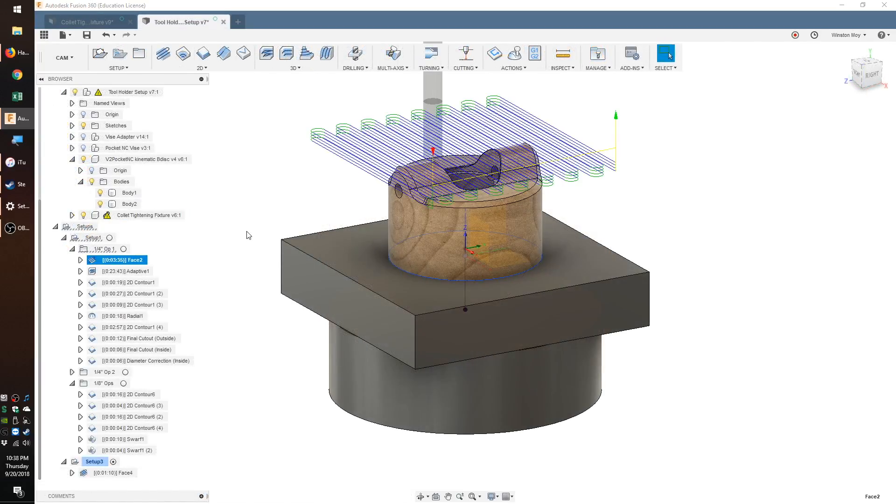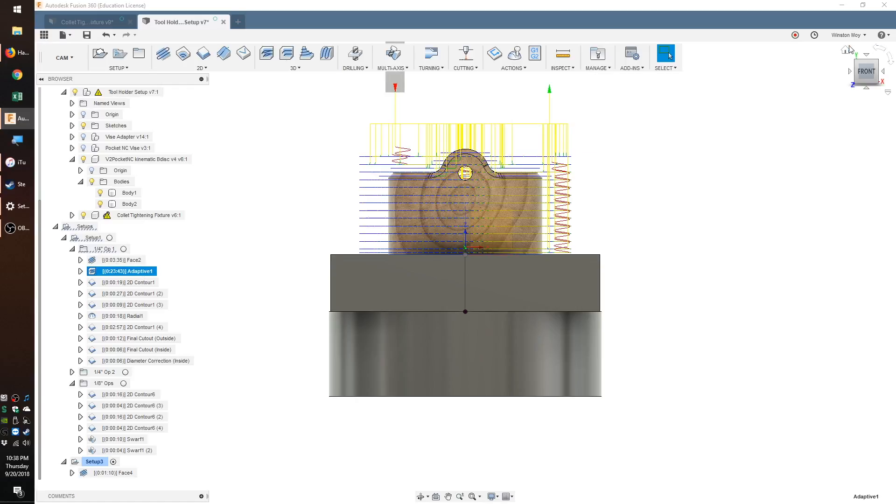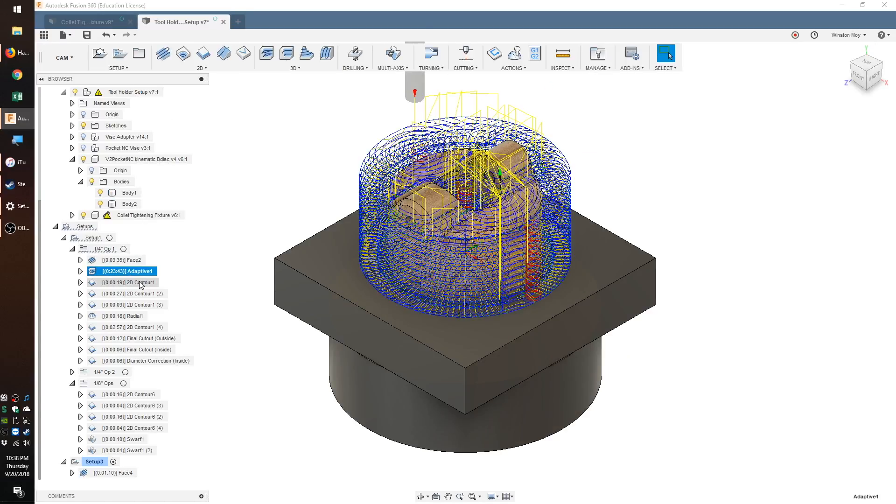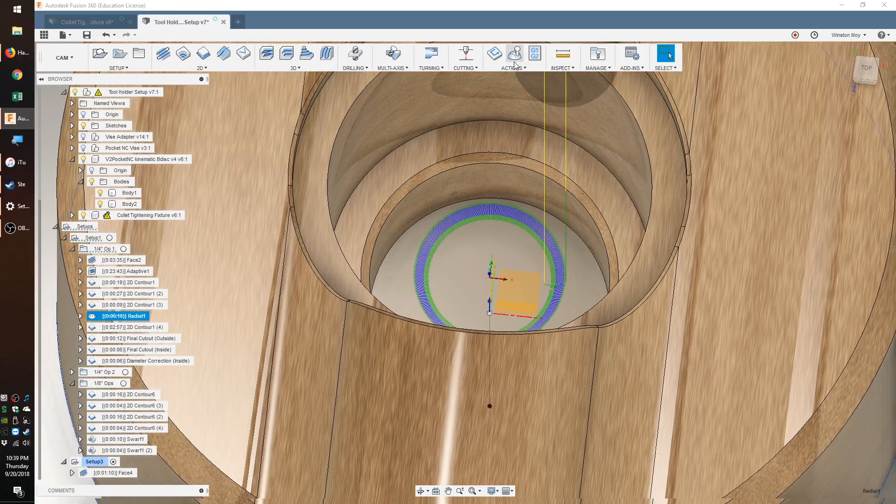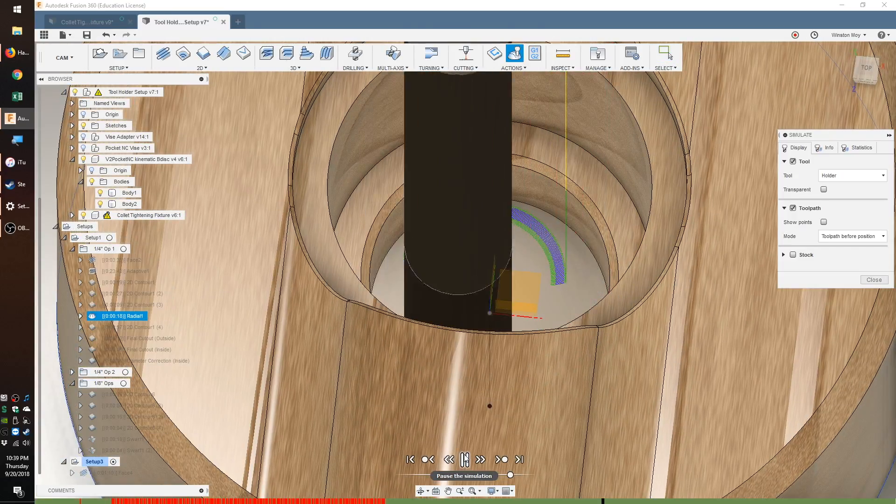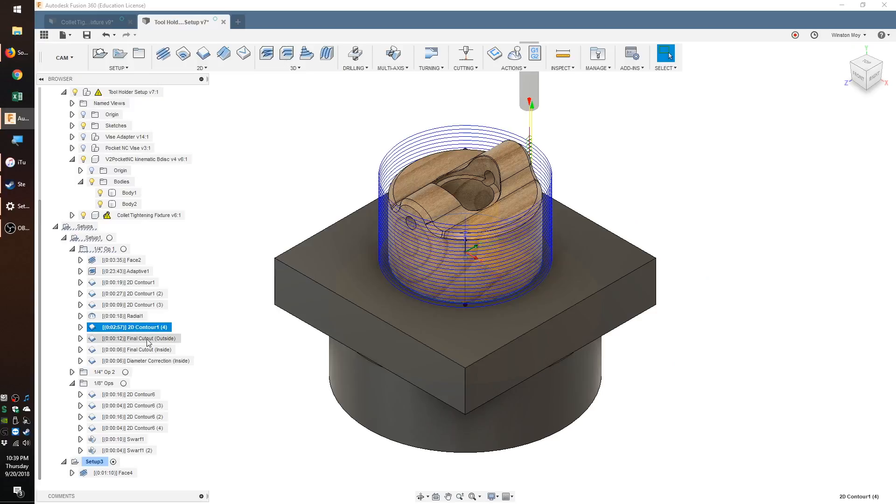The CAM was dead simple as far as Pocket NC programming was concerned. Adapt it from the top to clear as much as possible, true up the walls with contour operations, use 3 plus 2 machining to interpolate two holes for the pins, and do a 5 axis swarf to chamfer the edges.